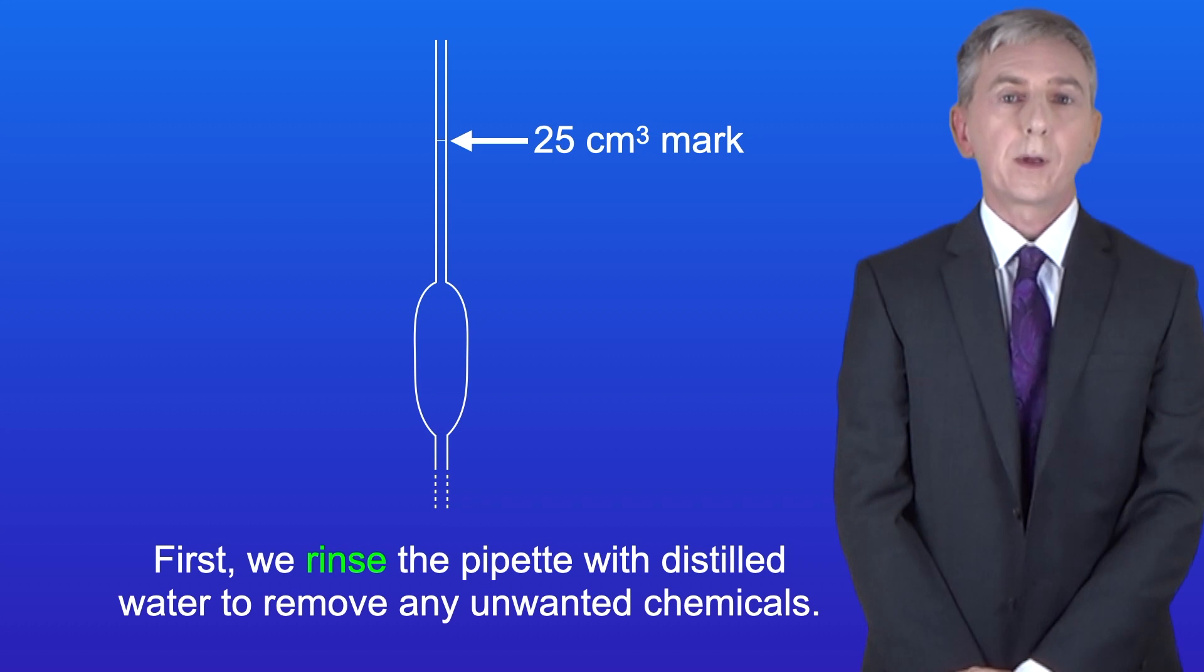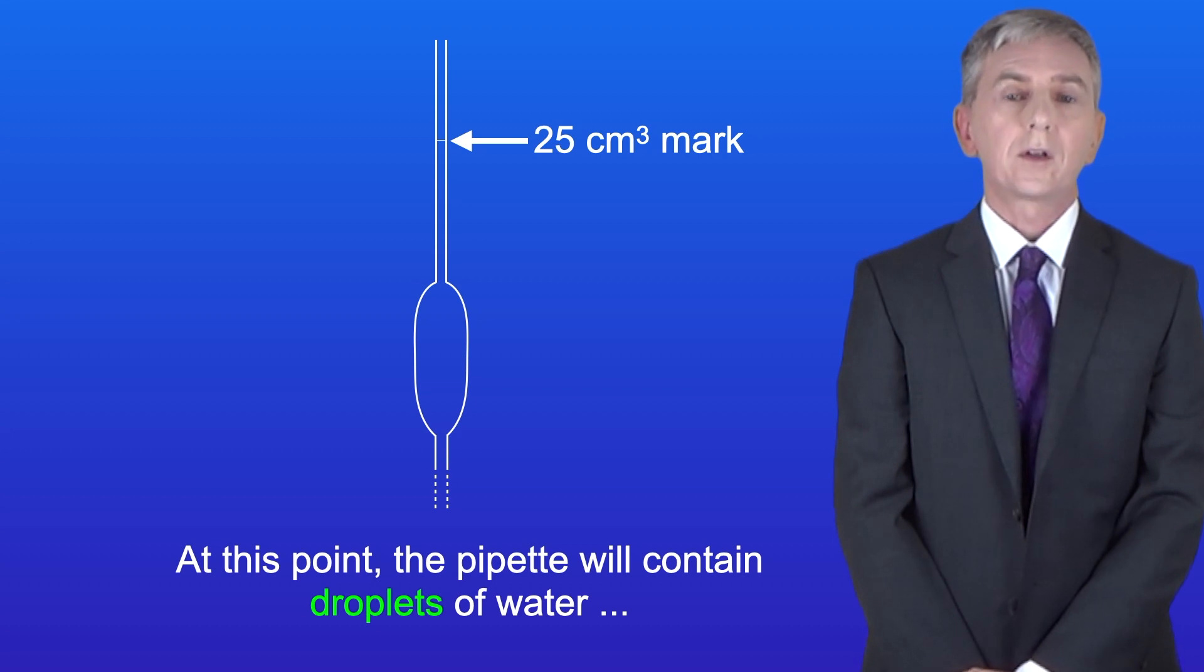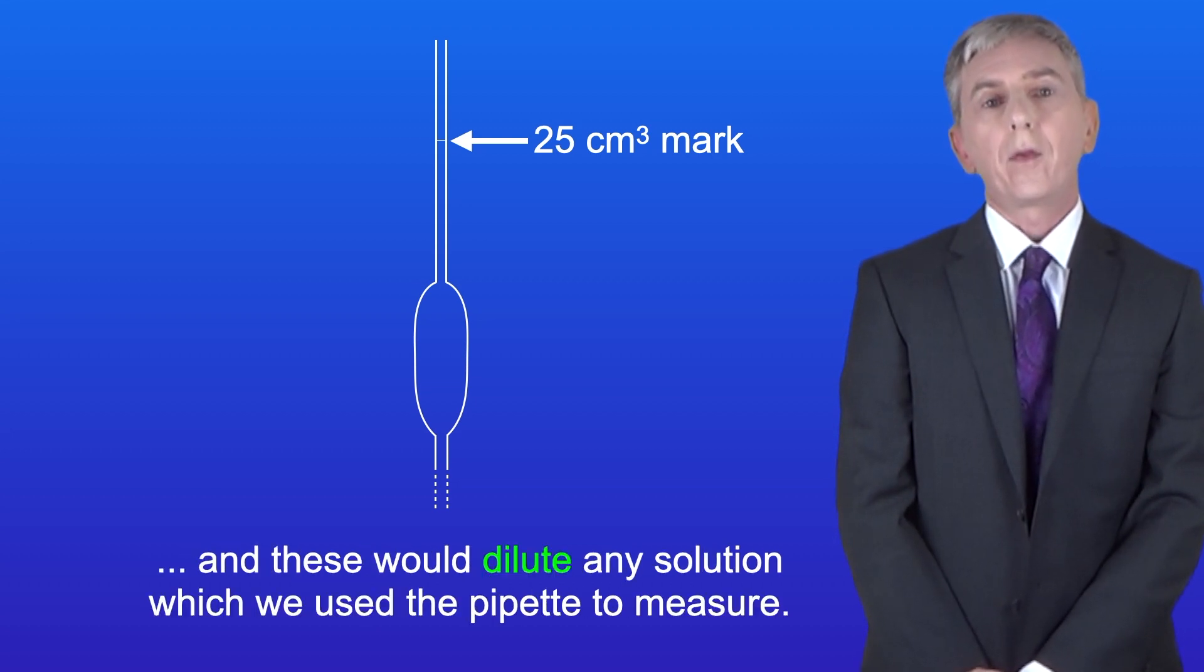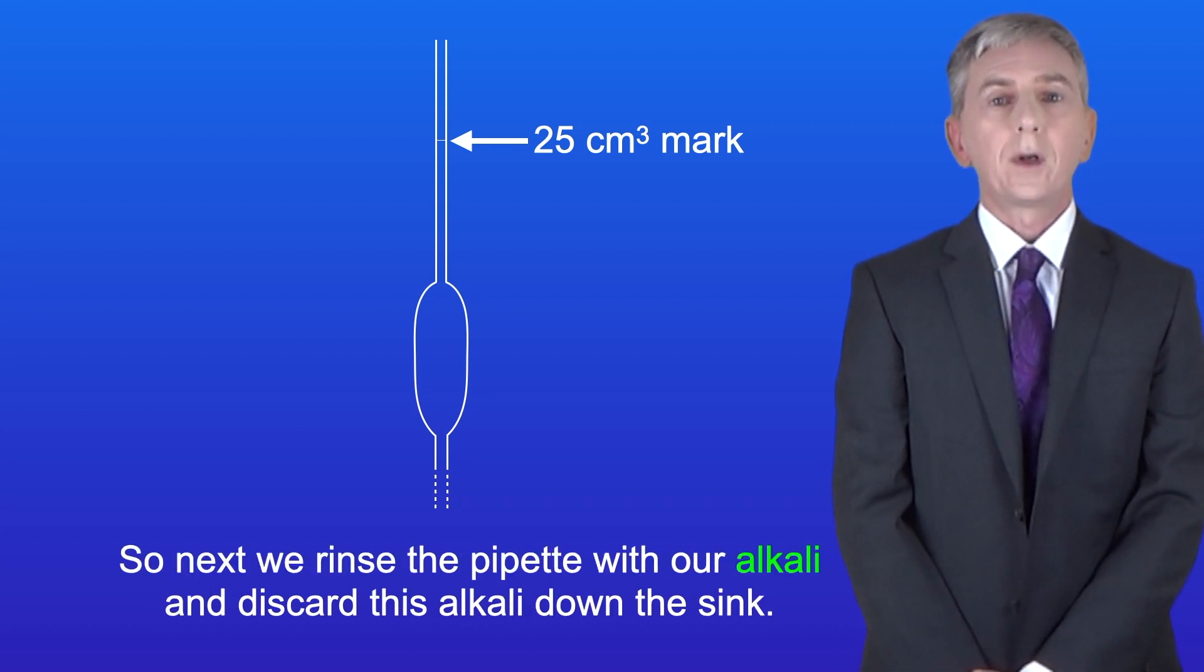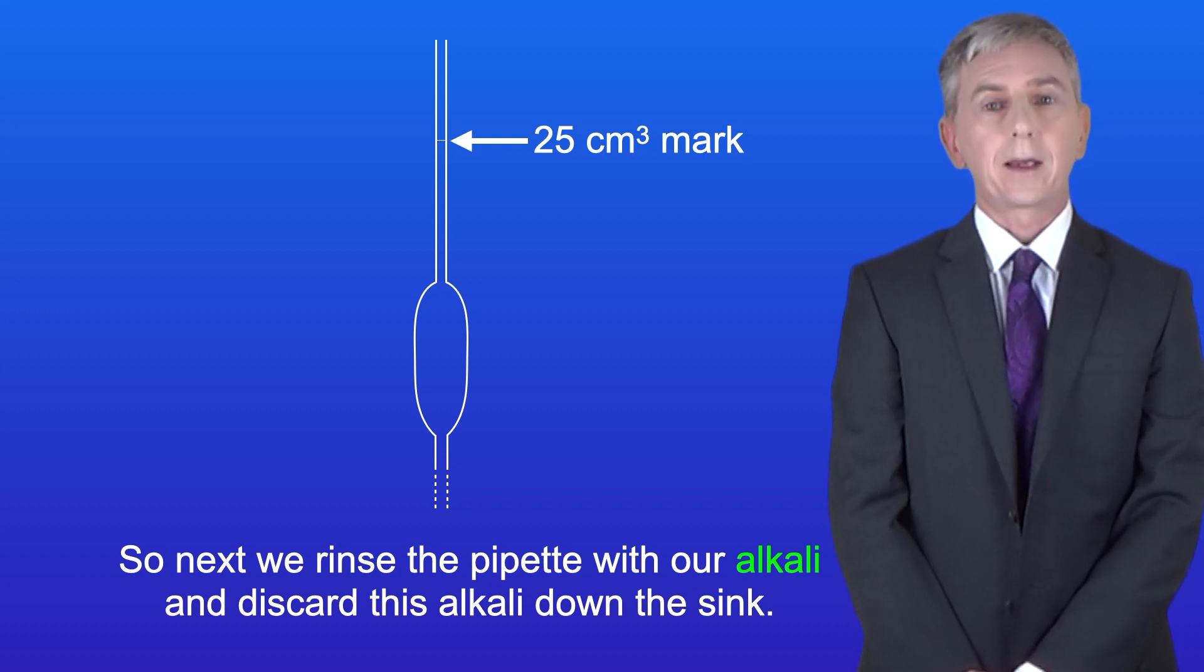So first we rinse the pipette with distilled water to remove any unwanted chemicals. Now at this point the pipette will contain droplets of water and these would dilute any solution which we use the pipette to measure. So next we rinse the pipette with our alkali and we discard this alkali down the sink.